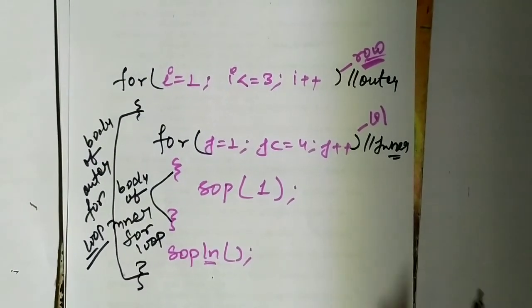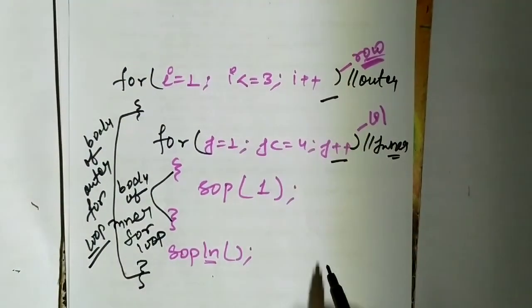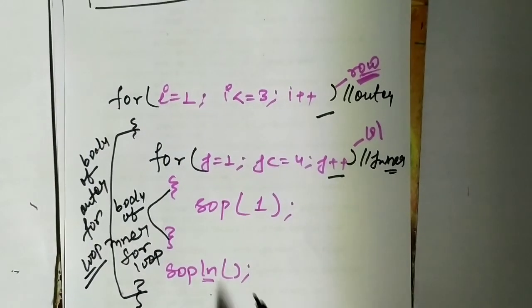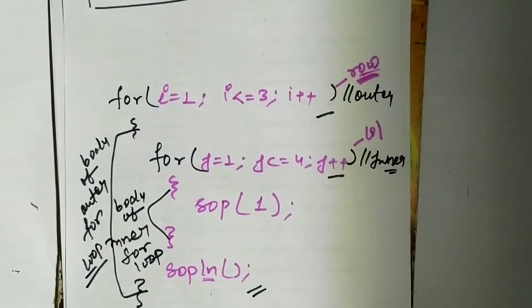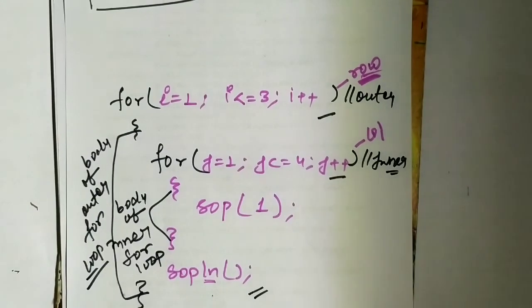So in this question we used two loops, that is a nested for loop. If you understand this video then please like, share, and subscribe. Thank you.